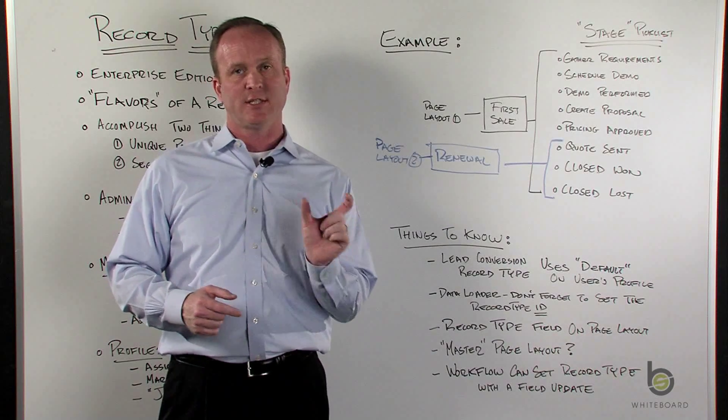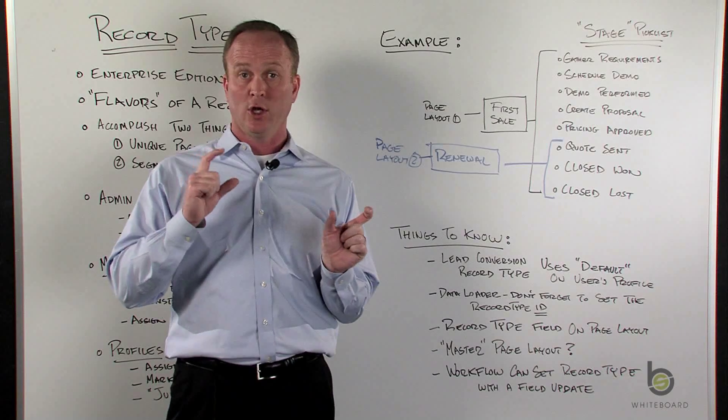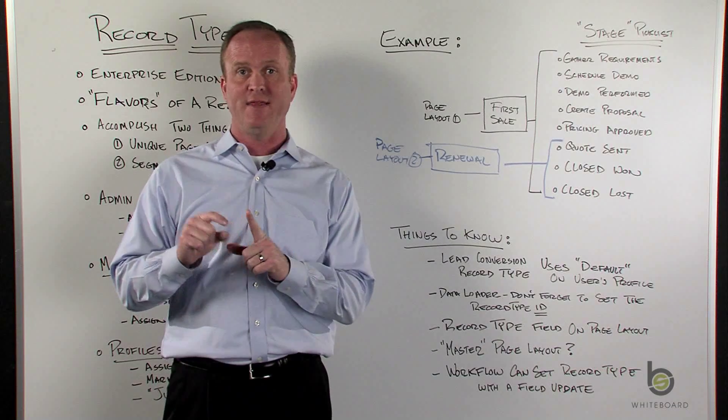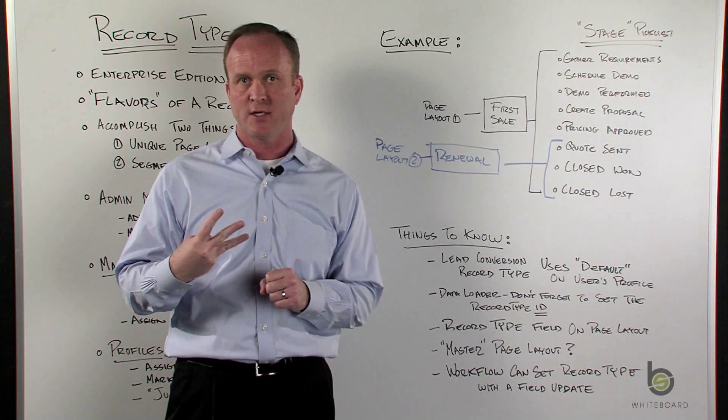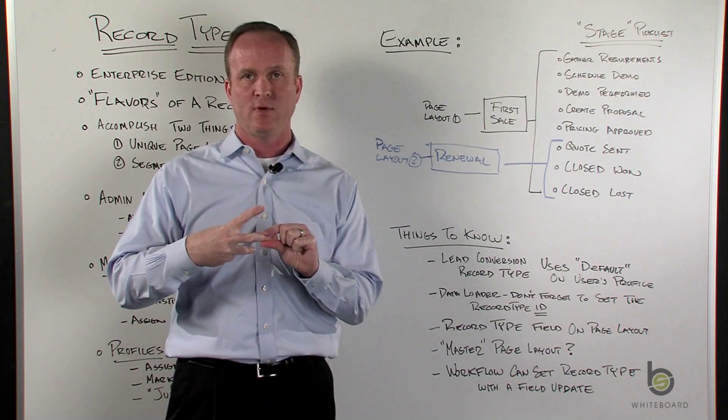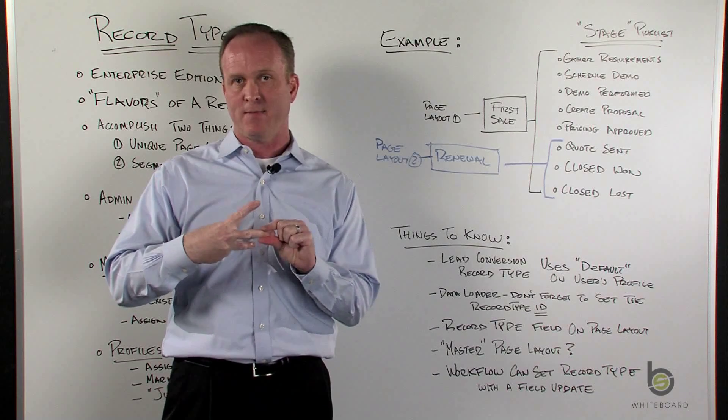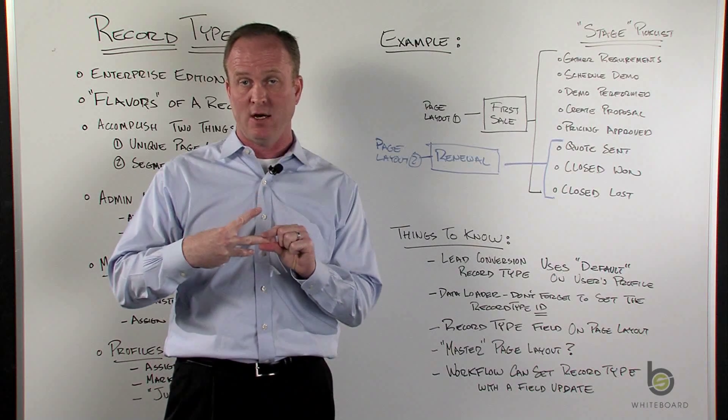So how this really works is Salesforce is going to look at the user, look at their profile associated with that user, and then find what the default record type is for that user. So if that profile has three record types and the second record type is the default, that's the opportunity record type that's going to be set on lead conversion.